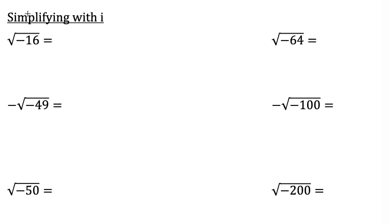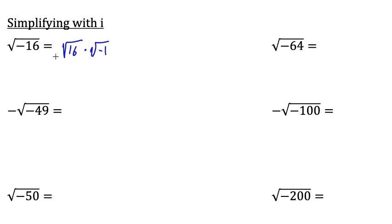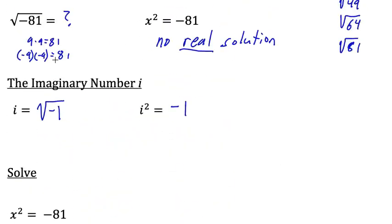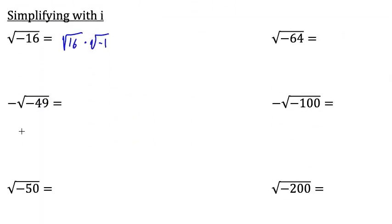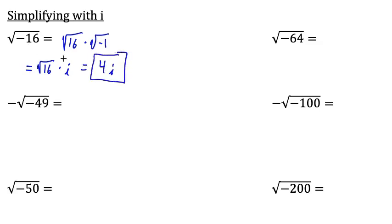Let's start with simplifying. We have the square root of negative 16. I'm going to break that down into the square root of 16 times the square root of negative 1. We learned that the square root of negative 1 equals i, so we can replace the square root of negative 1 with an i. This equals the square root of 16 times i. The square root of 16 equals 4, so this equals 4i. So the square root of negative 16 equals 4i.